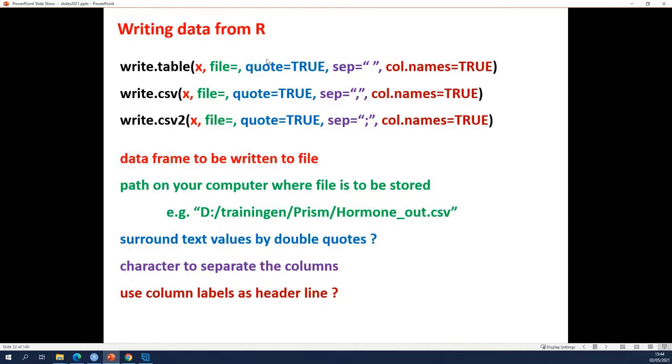This one specifies whether you want to print the column names as the first line in your text file. Sometimes you do, sometimes you don't. If you don't, you have to set this argument equal to false because the default setting is true.